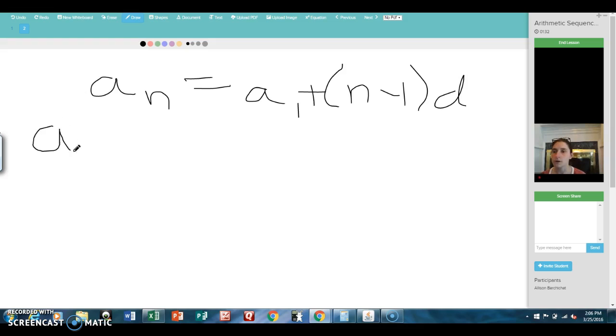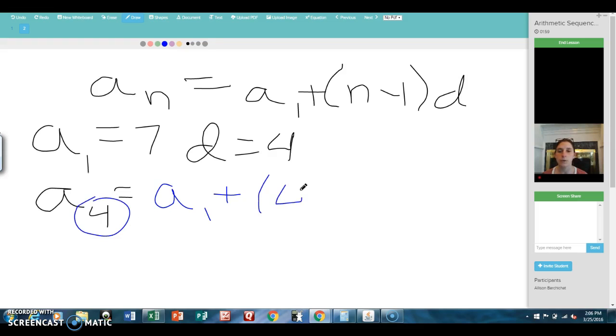Let's say that we know our first term A1 is 7, and we know that our common difference D is 4, and our job is to find the fourth term. So using my formula that I've written above, we're going to do A1 plus N minus 1, so since N is 4 in this problem, right here I'll put 4 minus 1, and then our common difference.